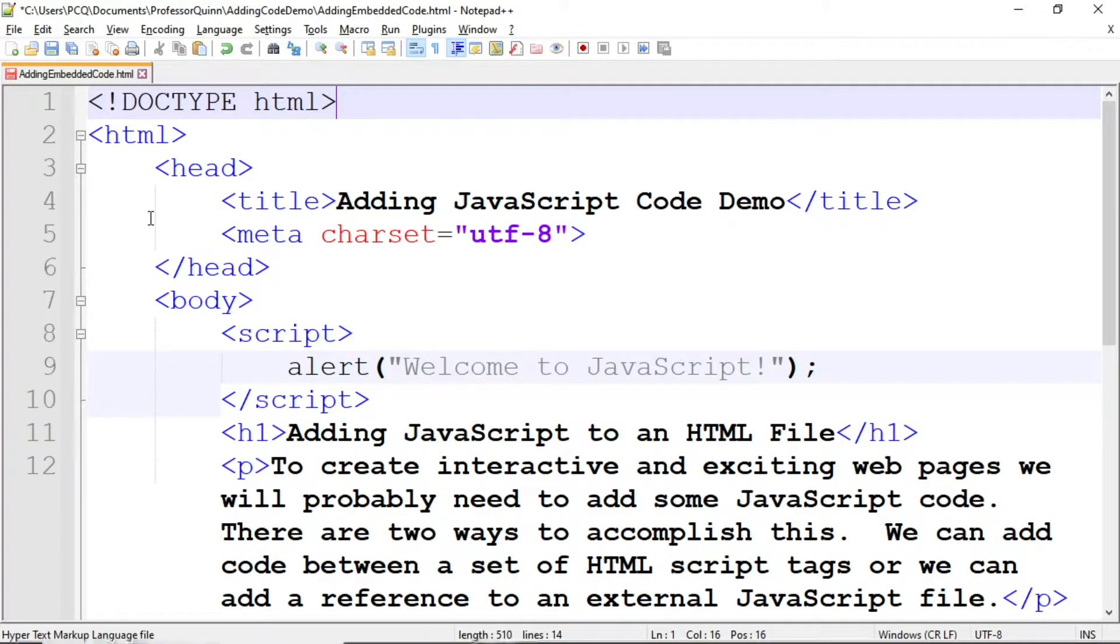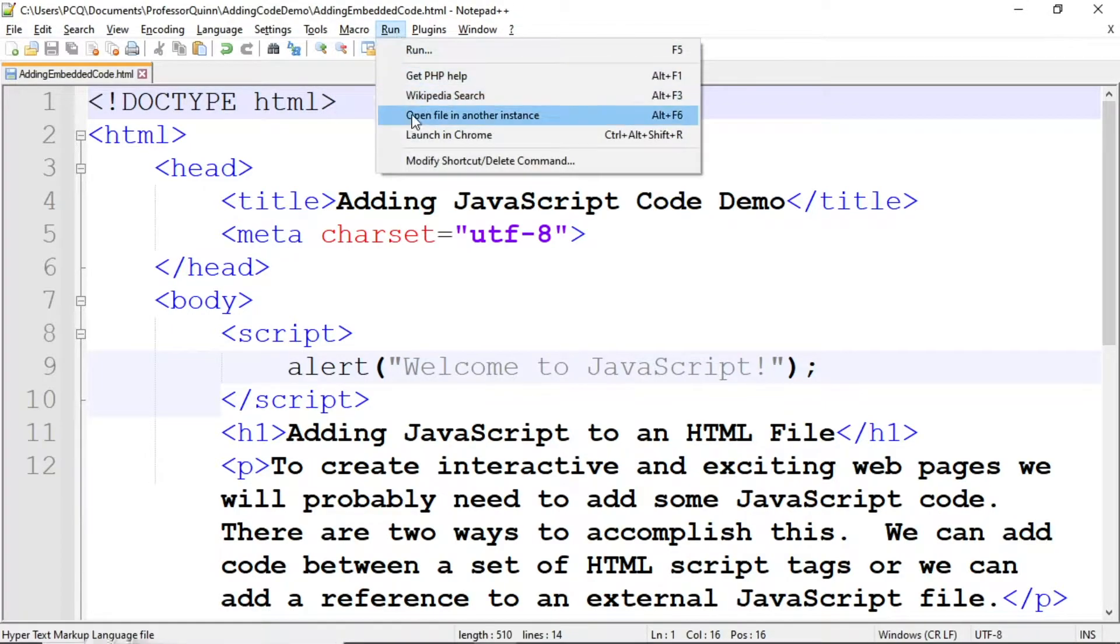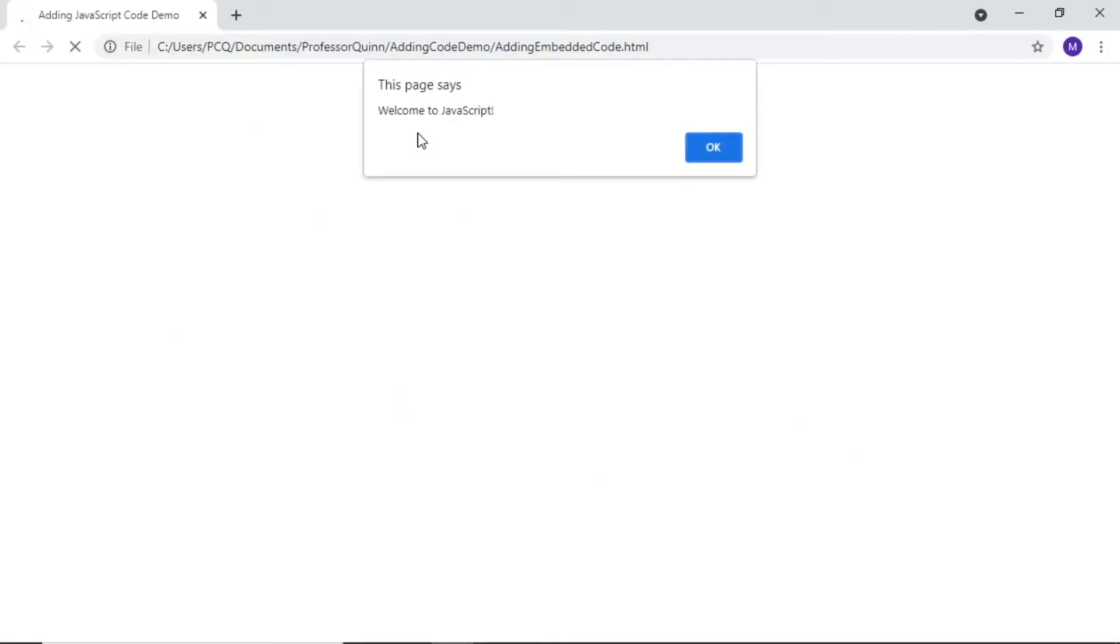As you can see here, we have an alert function correctly typed between script tags. We can save our work and run the code in the browser, and the alert box correctly displays.